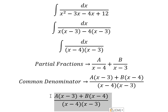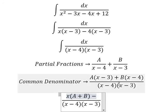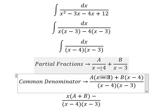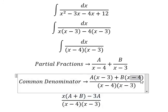Next we need to arrange based on the terms of x. For x we have A times x plus B times x, so we have (A+B)x. For the constant terms we have negative 3A and negative 4B.